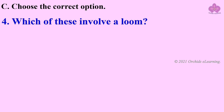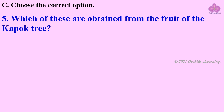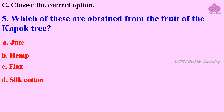Which of these involves a loom? Which of these are obtained from the fruit of the kapok tree? Options: jute, hemp, flax, silk cotton. Answer: silk cotton.